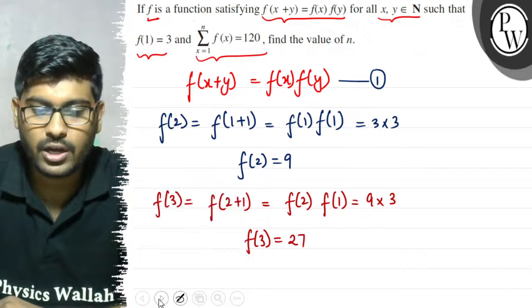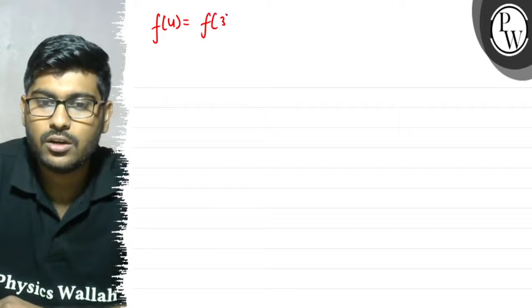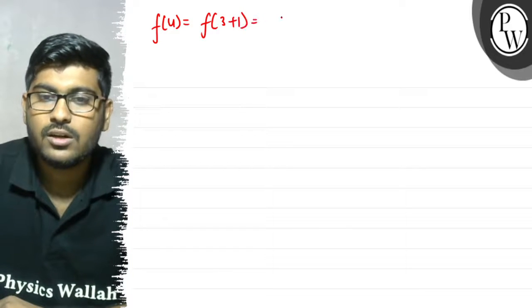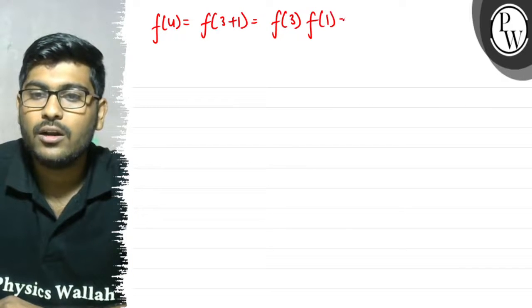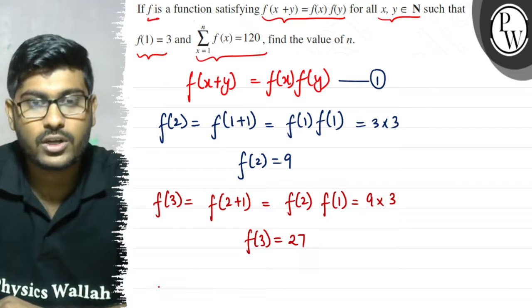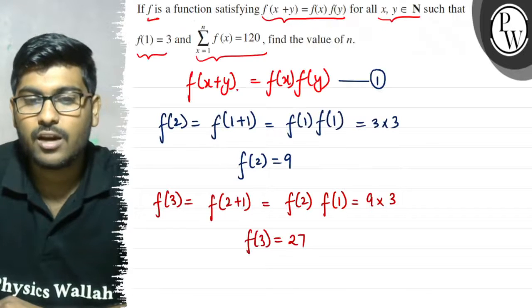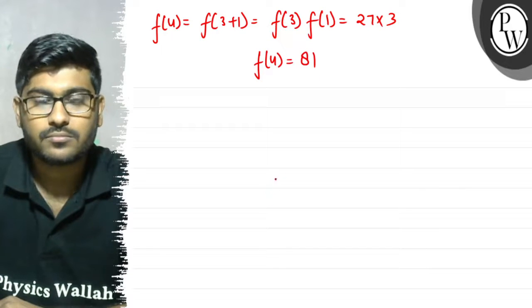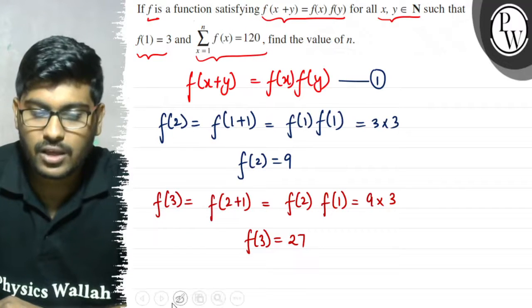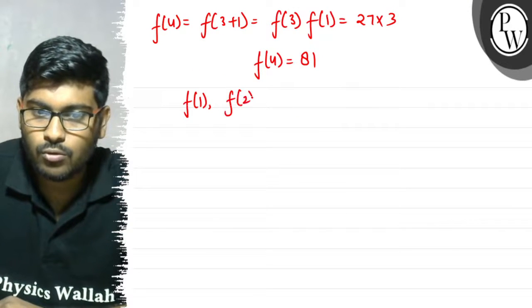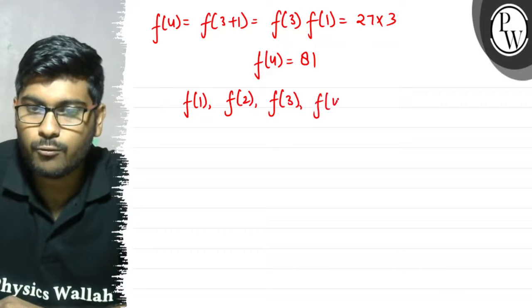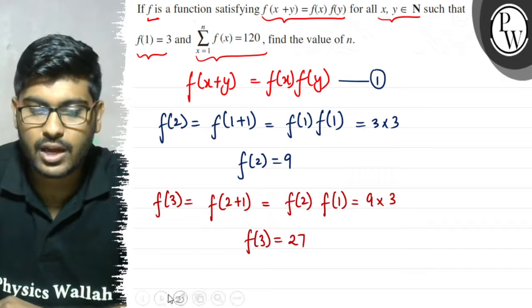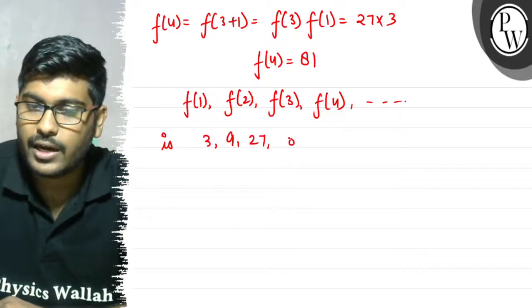Similarly, if we want to write f(4), f(4) is equal to f(3+1), that is f(3)·f(1). f(3) is 27 and f(1) is 3, so f(4) becomes 81. So we understand that f(1), f(2), f(3), f(4) and so on is: f(1)=3, f(2)=9, then 27, then 81, and so on.